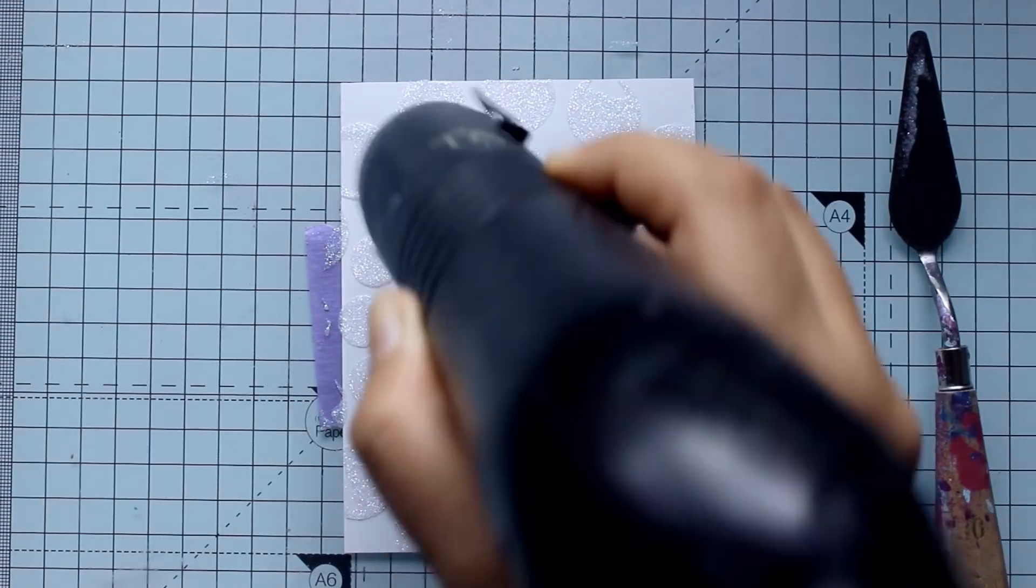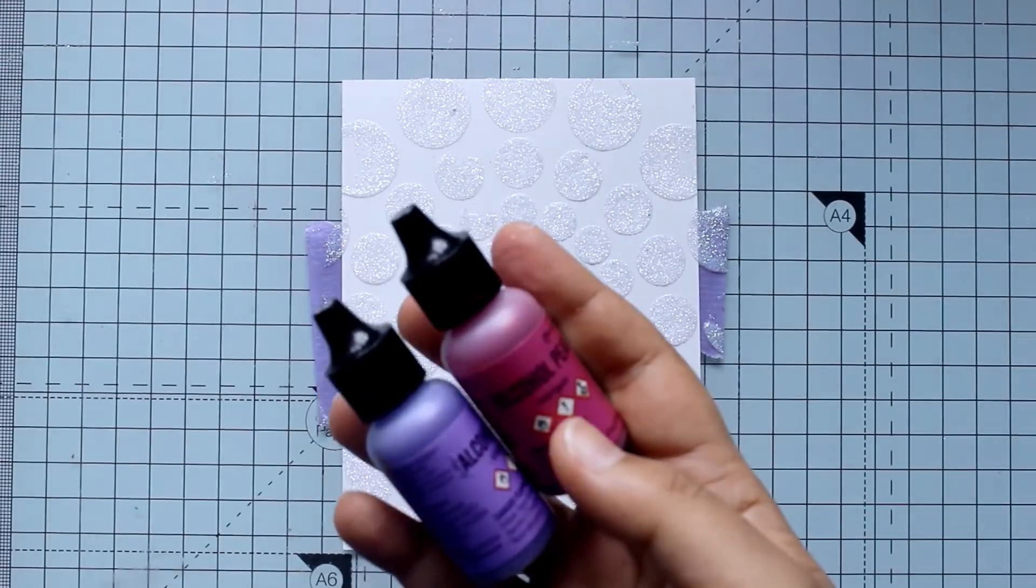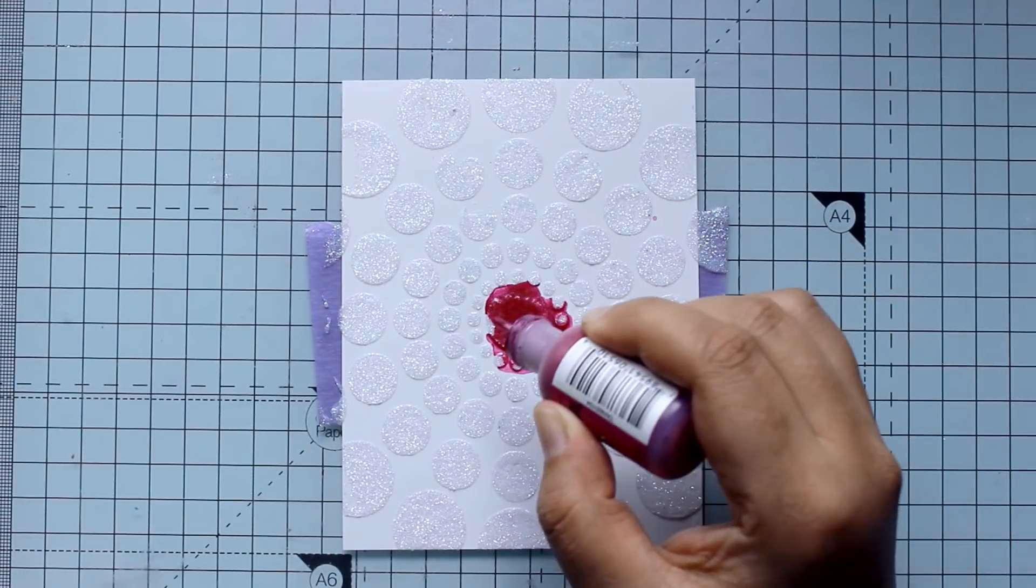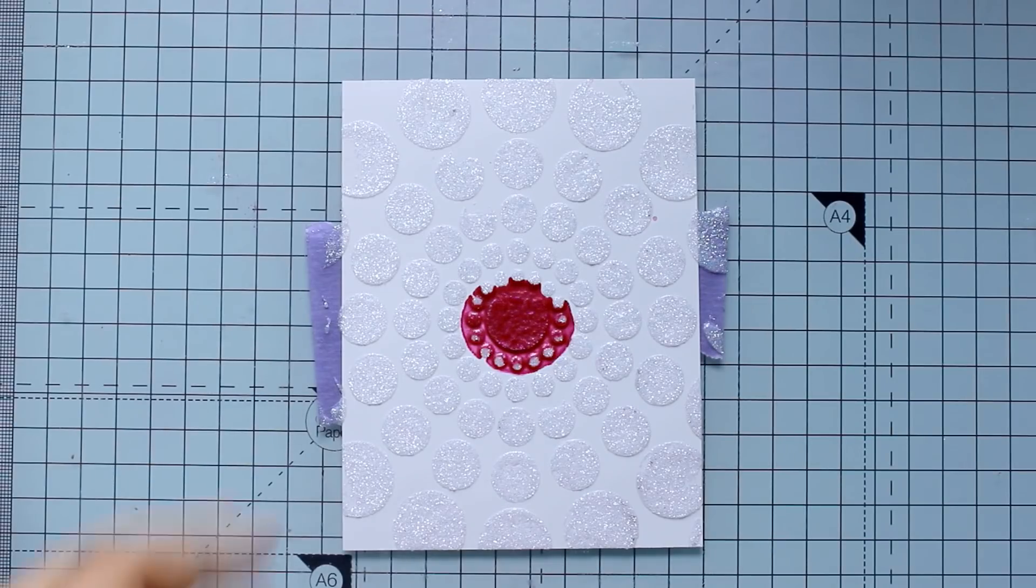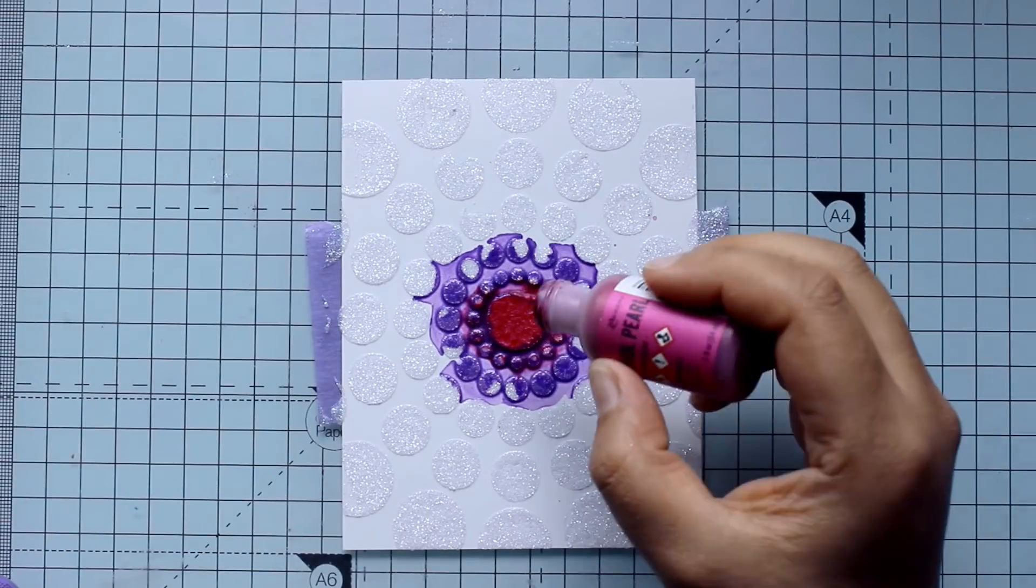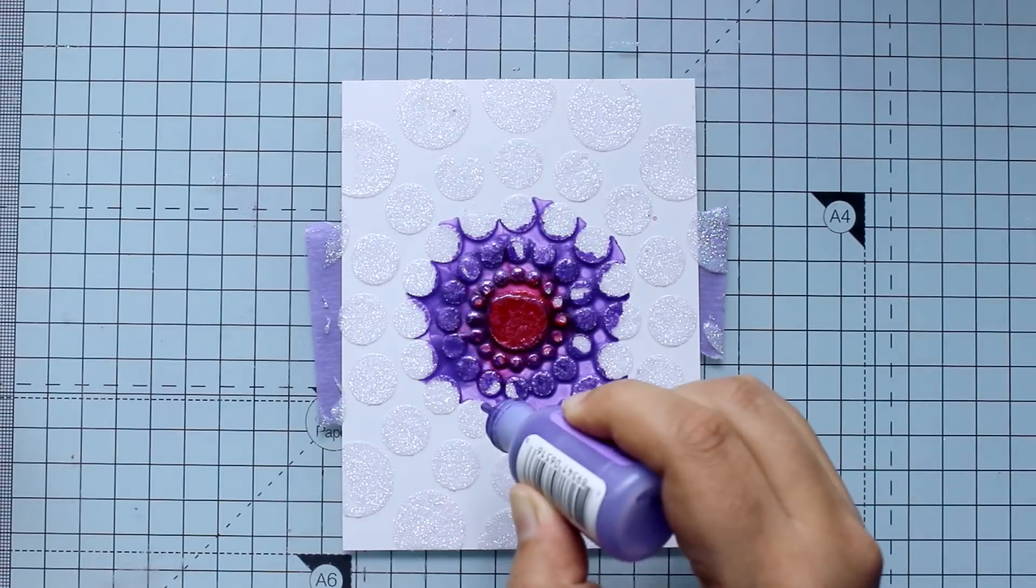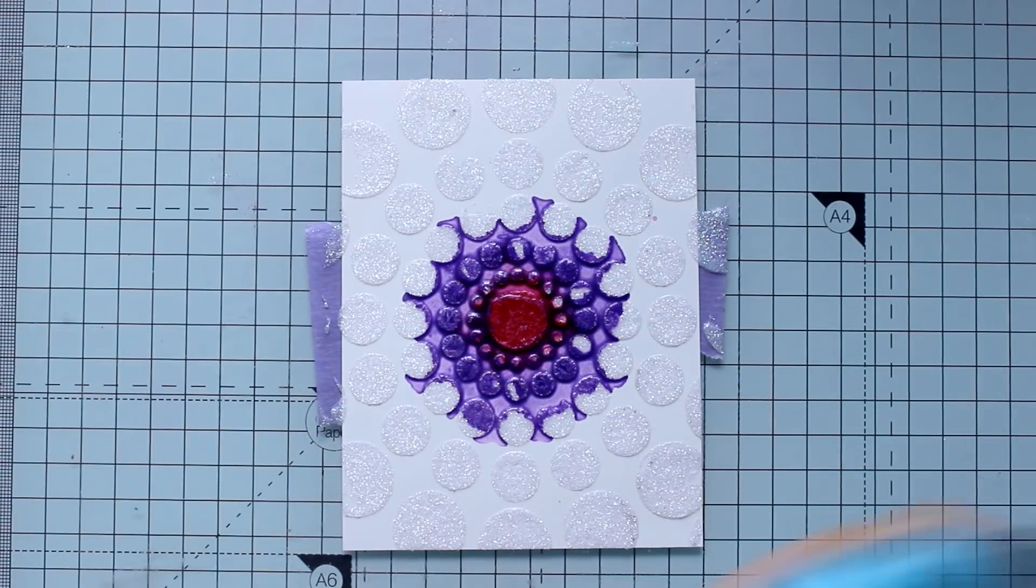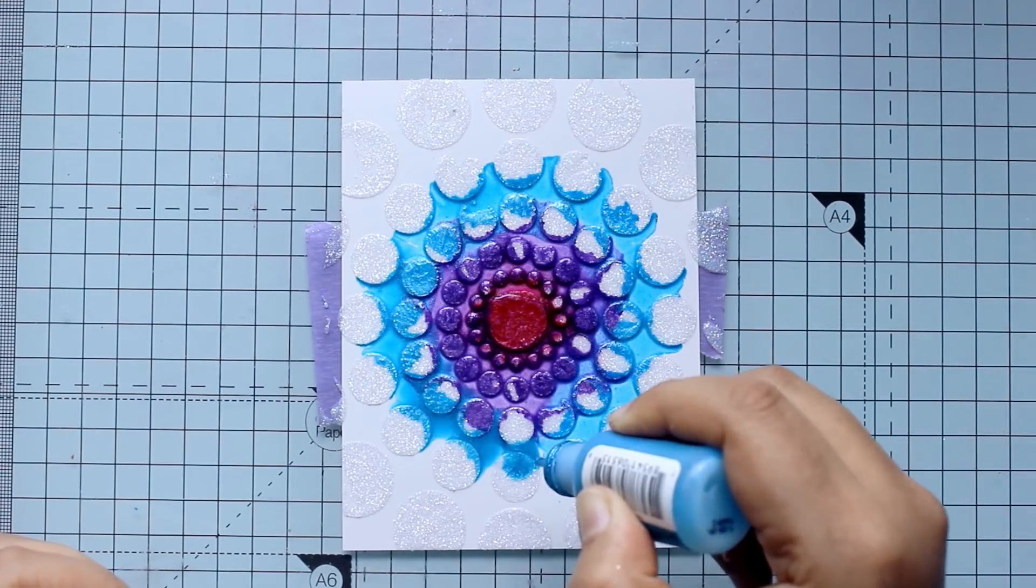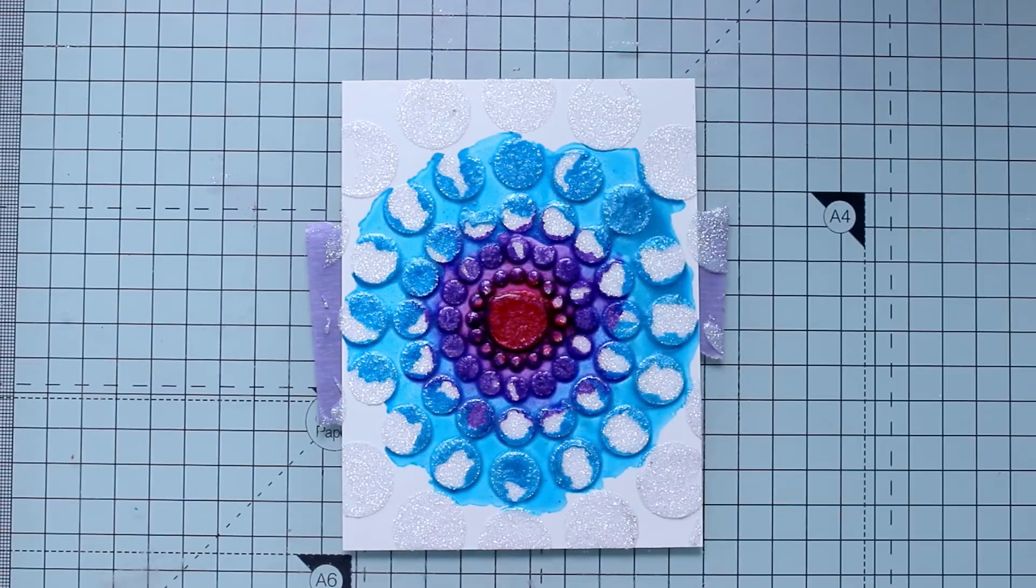Once I have put the glimmer paste down through the stencil, I've quickly dried it with my heat tool and I gave my alcohol pearls a shake before starting to drip them onto my surface. You can use any sort of alcohol to dilute the alcohol pearls but I chose to directly drip them on to the surface to get the full effect of the shimmers.